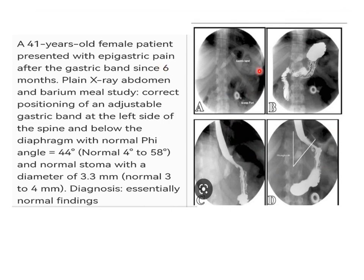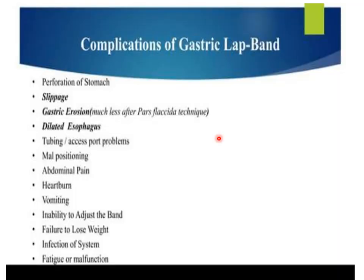A series of upper GI images shows a normal gastric band, the port size, the small gastric pouch, and a normal distal esophagus. Complications of the laparoscopic gastric band include: slippage (most common), gastric erosion, dilated esophagus, perforation of the stomach, tubing and access problems, malpositioning, abdominal pain, heartburn, vomiting, inability to adjust the band, failure to lose weight, infection of the system, fatigue, and malfunctioning.